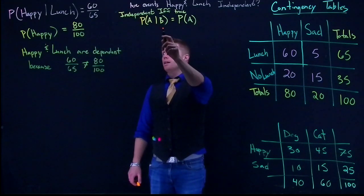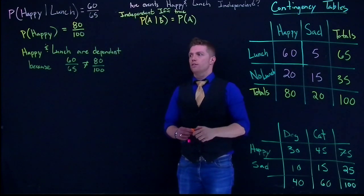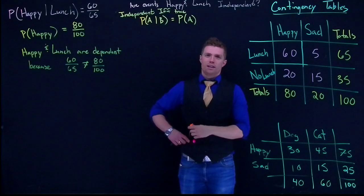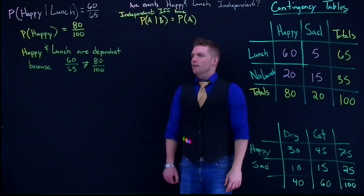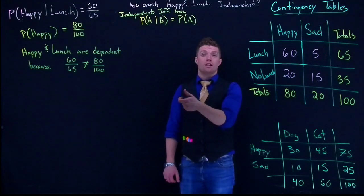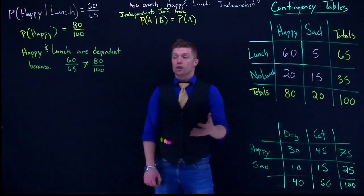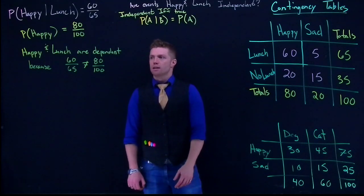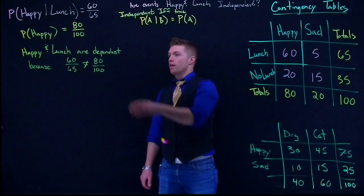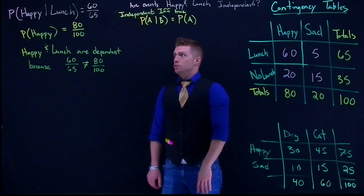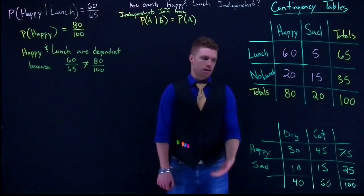The only way for them to be independent is if those two values were exactly equal. In practice, if they're really close, we might say they're independent — but for this class, we go by strict equality. Now I want to show you an example where they are independent, which is why I set up this happy/sad with dogs and cats table.